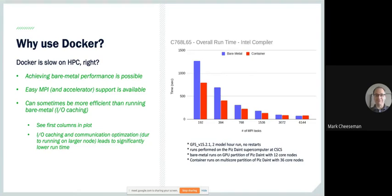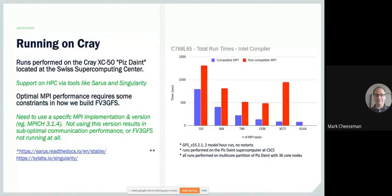The question still comes up: Docker is slow, right? But that's not really the case — it hasn't been for a while. You can get bare-metal performance. I have runs using bare-metal and container versions of FV3 running C768 configuration, both using the Intel compiler compiled binaries. The main takeaway is that as you increase the core count, the performance pretty much levels out. We're not hitting a major roadblock running inside a container.